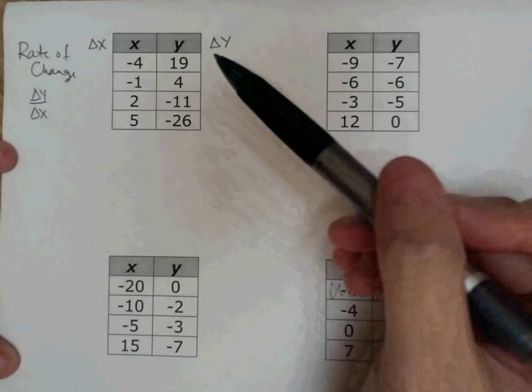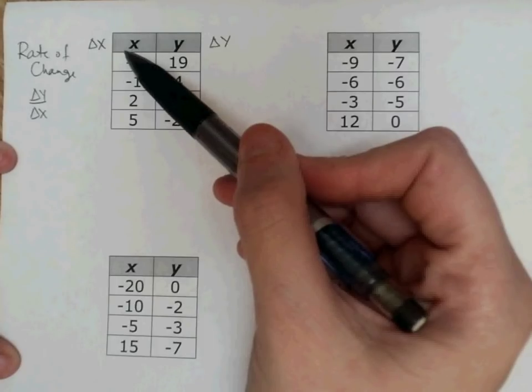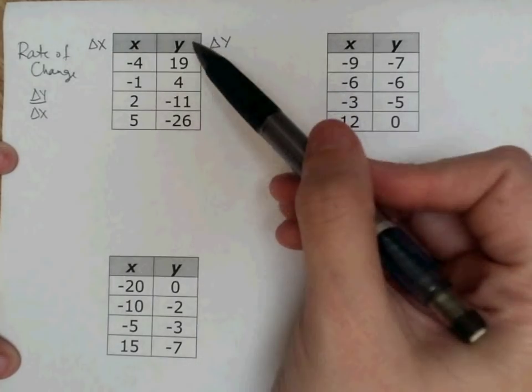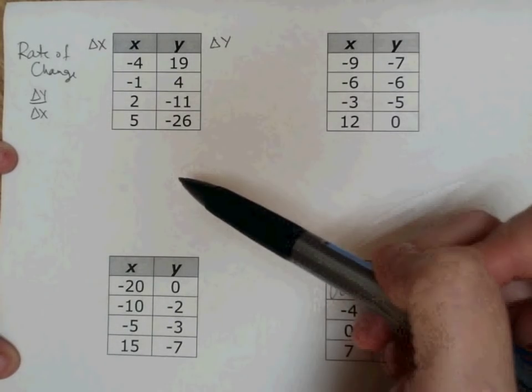Now, rate of change is also the vertical change, which is y over horizontal change, which is x, which when we look at a graph we call rise over run. So that's the reason why all of these things are related.